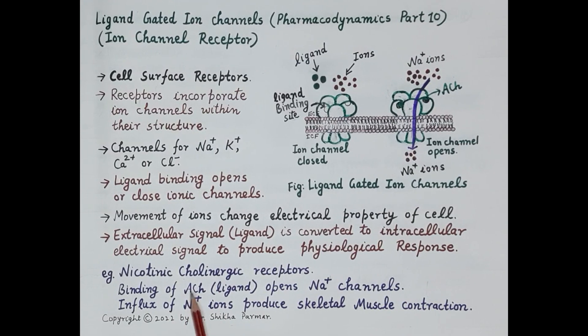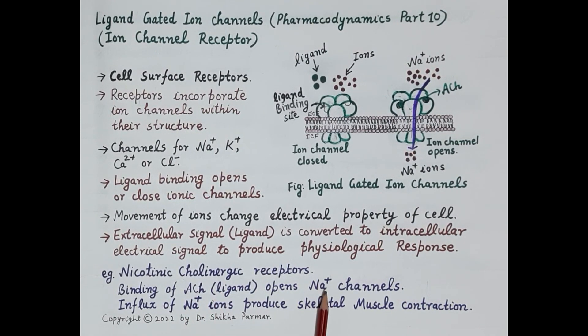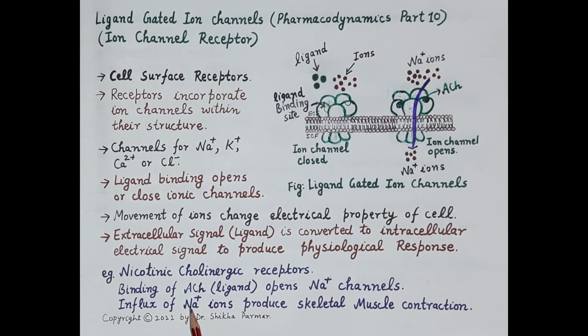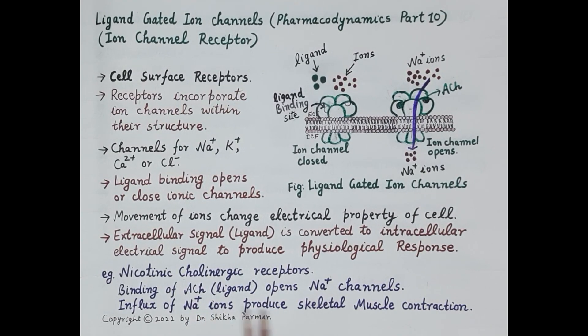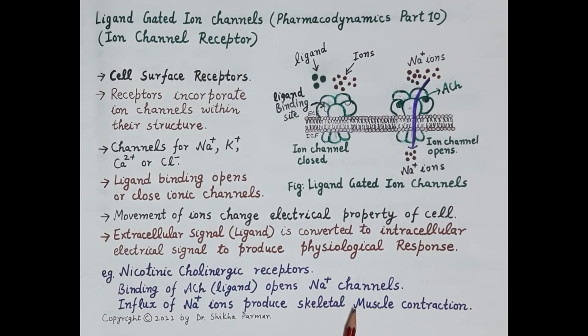As discussed, acetylcholine binds to nicotinic cholinergic receptors, which causes the opening of sodium channels. There is influx of sodium ions, producing the physiological response—contraction of skeletal muscles. This is how ligand-gated ion channels or ion channel receptors produce physiological response.